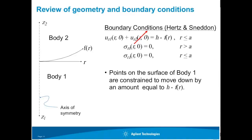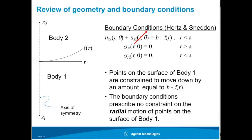This first boundary condition simply states that points on the surface are constrained to move down by an amount equal to h, less the original separation distance. This second boundary condition expresses the fact that there are no surface tractions outside the contact radius, and the third boundary condition expresses that there is no tangential stress at the surface — in other words, there's no friction between the two bodies. Importantly, the boundary conditions prescribe no constraints on the radial motion of points on the surface of body one; only axial displacements are prescribed, and that has implications for us, just as we saw last time.